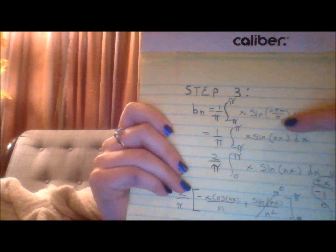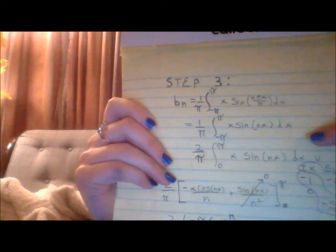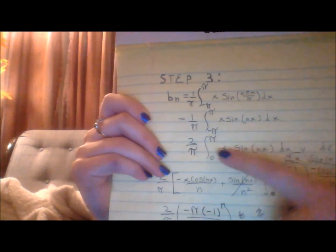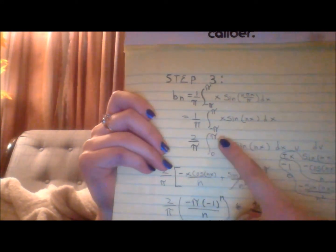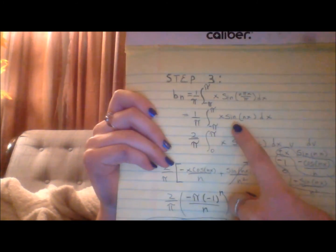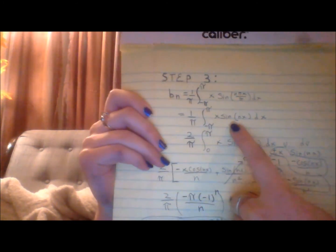Since we have pi as our p, we can cancel those, and you end up with this, which is easier obviously.